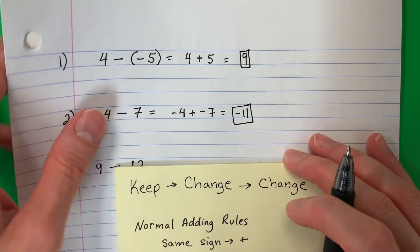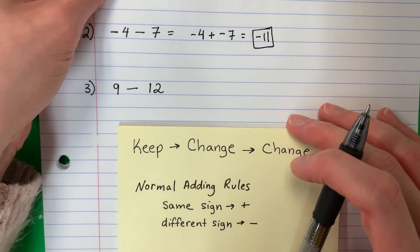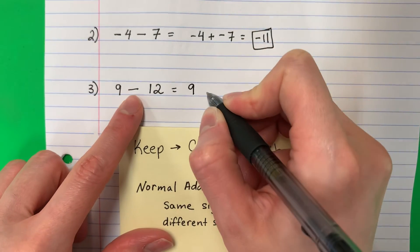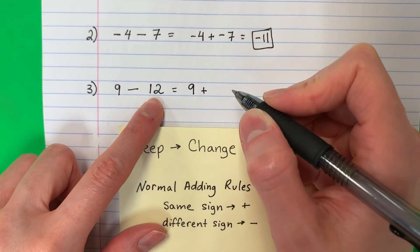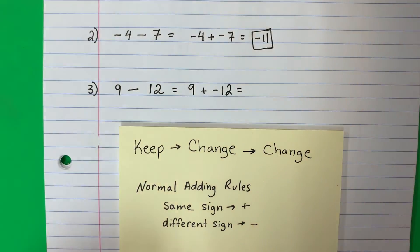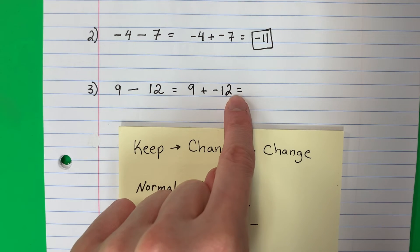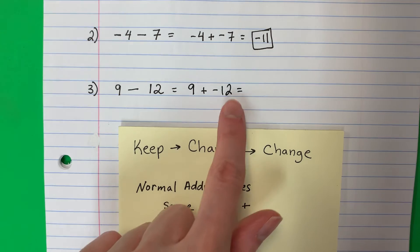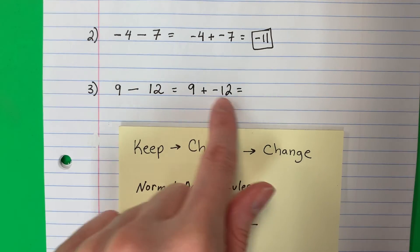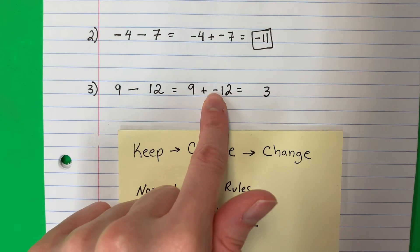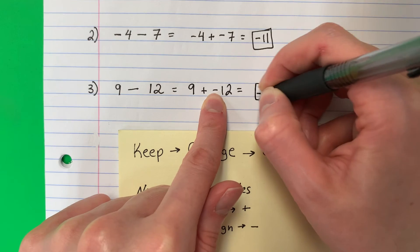Last one — keep, change, change. Keep 9, change minus to plus, change positive 12 to negative 12. Same sign or different? Positive 9 and negative 12 are different signs, so we subtract. 12 minus 9 is 3. Keep the sign of the bigger number — 12 is negative — so the answer is negative 3.